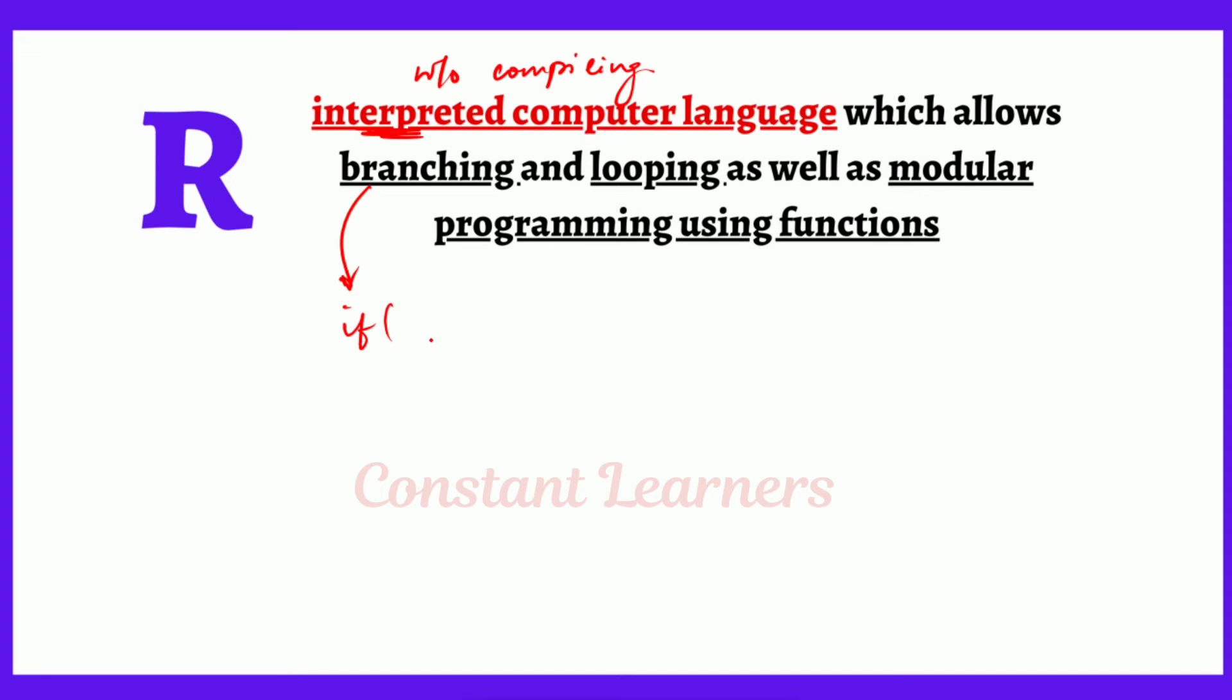And looping is to repeat a certain action again and again, like for example by using while loop. While x is less than or equal to four then perform certain task or exit from the loop. So this is nothing but a looping operation. So R supports both branching and looping operations.